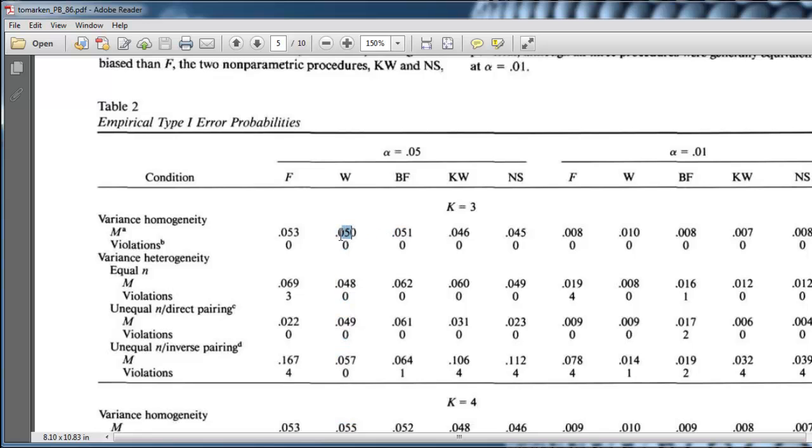So, Welch is finding protection at 0.05. That's what we specify. That's what we hope to see. Brown Forsyth is good. Kruskal-Wallis is a little bit less powerful, so it's protecting at 0.046 rather than 0.05. And this other test that I don't really know much about is even more conservative.